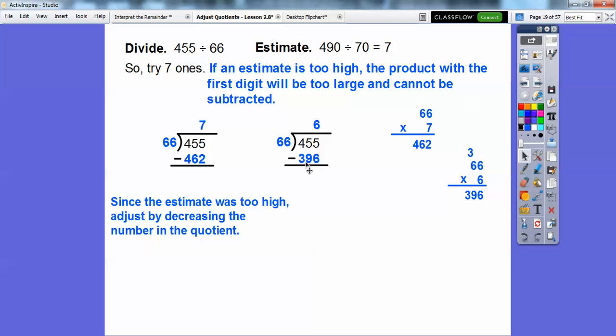66 times 6 is 396. When we subtract 455 minus 396, we get 59. So it's 6 remainder 59. When we got a number that was too big, we can't subtract. In the other one where the difference was bigger than the divisor, that told us we had to increase it. Here we had to decrease the 7 to 6.